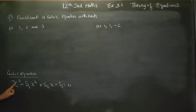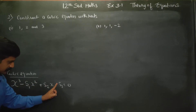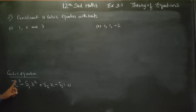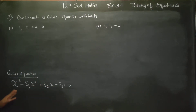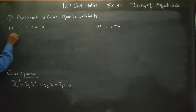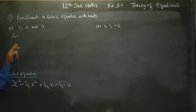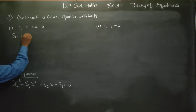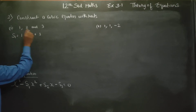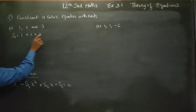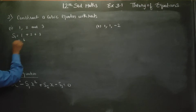The signs for x cube, x square, x, and the constant term alternate: plus, minus, plus, minus. The coefficients are s1, s2, and s3. What is the meaning of s1? s1 is the summation of one root at a time, so s1 = 1 + 2 + 3. Your answer will be 6.